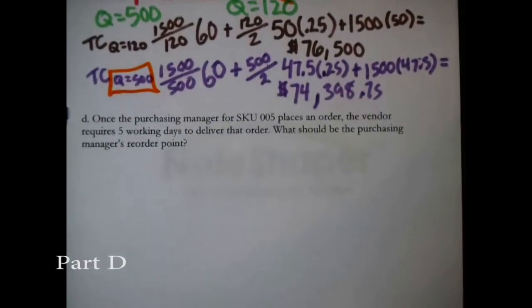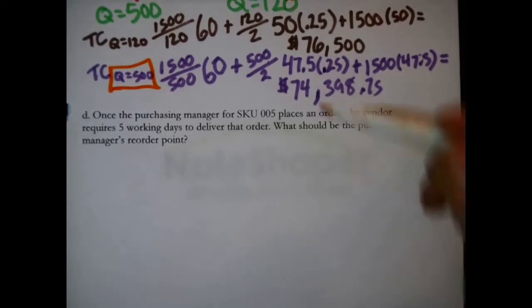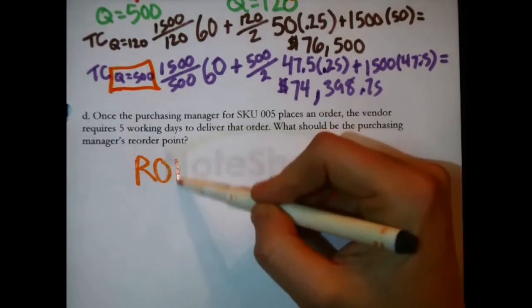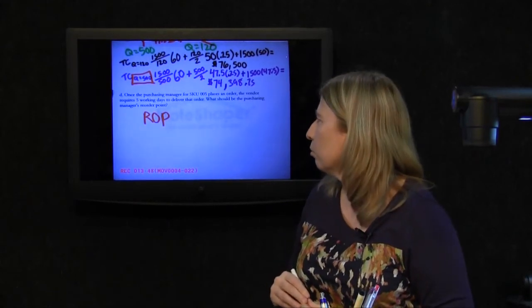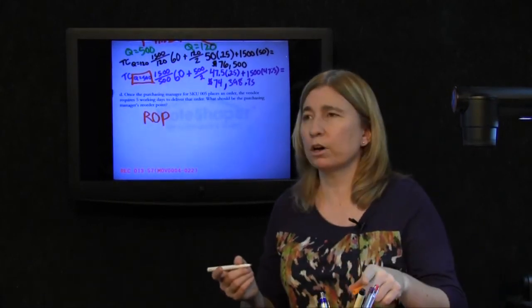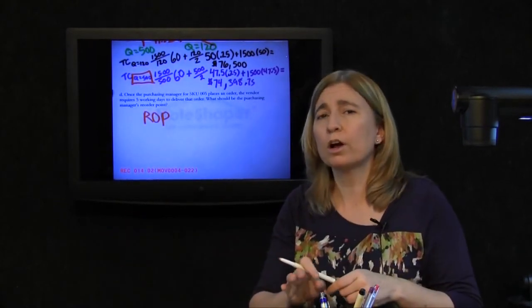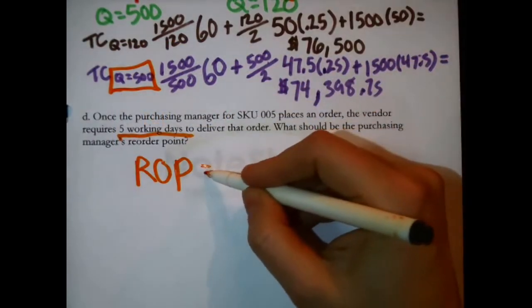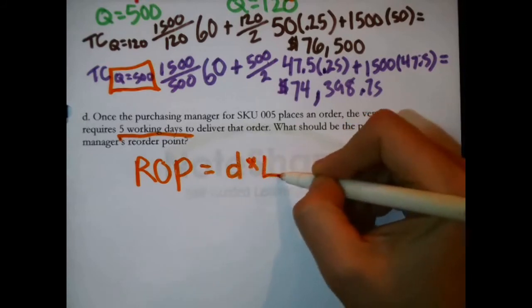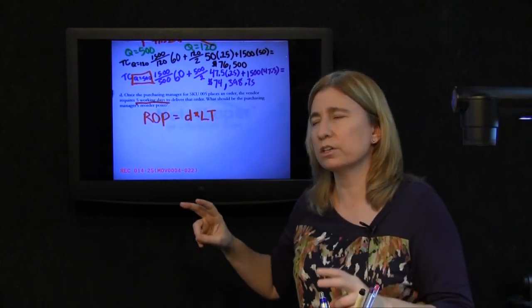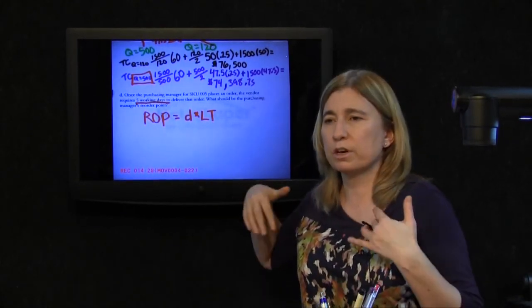Now, the last question. Once the purchasing manager for SKU 005 places an order, the vendor requires five working days to deliver that order. That's not about amount. What should the purchasing manager's reorder point be? That is about not how much, but when. This is about setting a reorder point. How do you set a reorder point? We're going to wait five days for the order to get there. First, we thought the order was going to be 120 and then we decided it's going to be 500 because of this discount. But regardless of how much we're going to order, this is telling us that our lead time, good vocabulary term, is five working days. A reorder point under these circumstances is just how much we're going to need, consume, use, or sell during those five days. So actually, what I wrote here is just symbolically what the formula is. It would be the five days, the lead time times however much we're going to need each day.